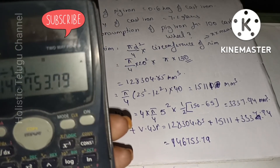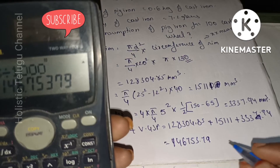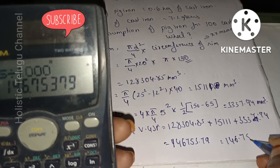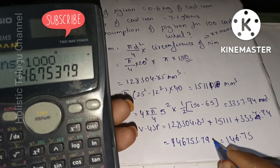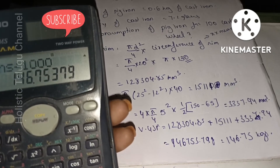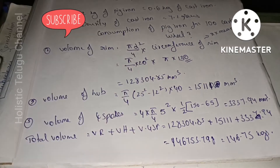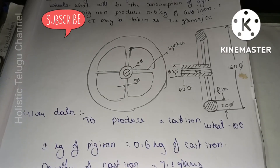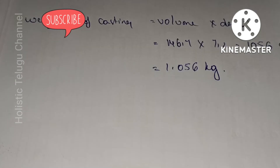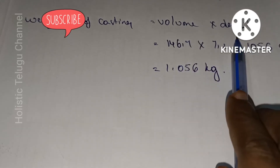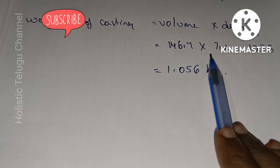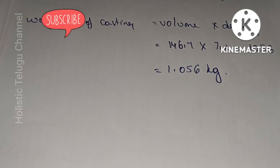The total volume is approximately 146,753 mm³, which we convert to cm³. Weight of casting = volume × density = 146.7 cm³ × 7.2 g/cm³ = 1056 grams, which equals 1.056 kg per wheel.